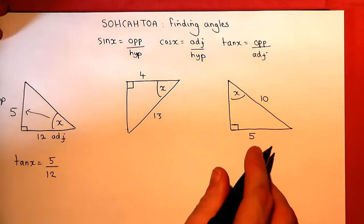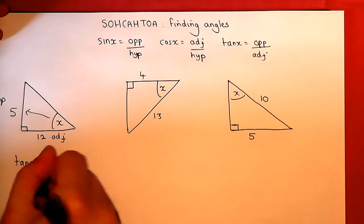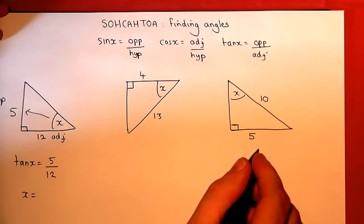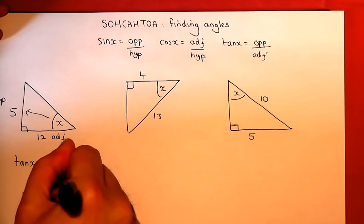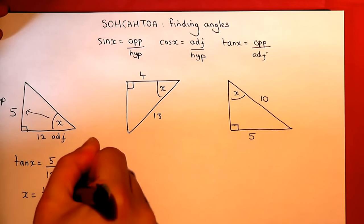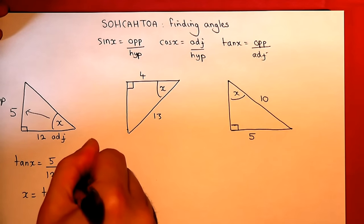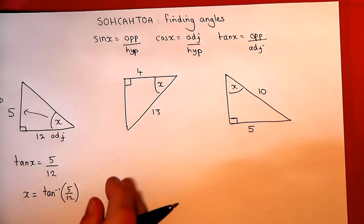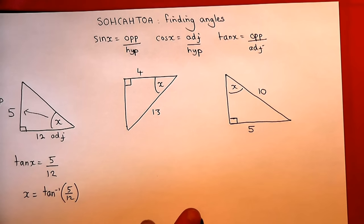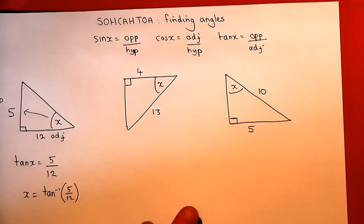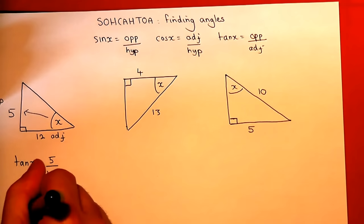To find x, we have to use the inverse tangent function — shift tan on the calculator, or inverse tan. So x equals inverse tan of 5 over 12. We put that into our calculator and get the answer: 22.6 degrees.